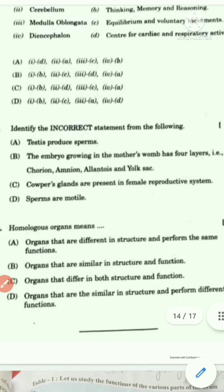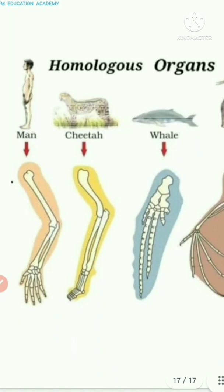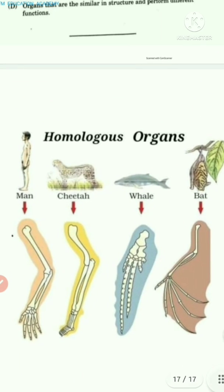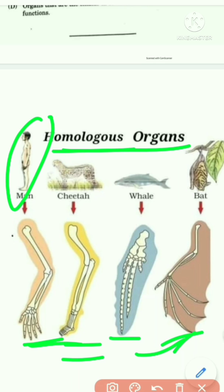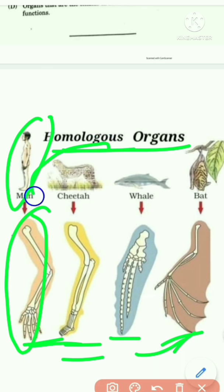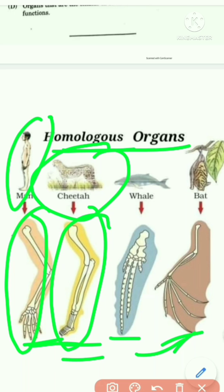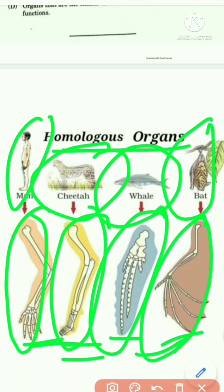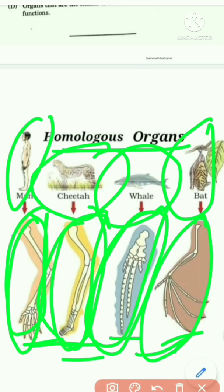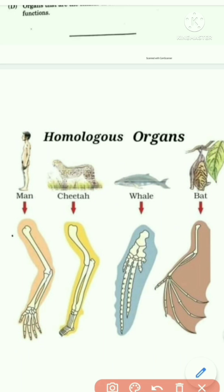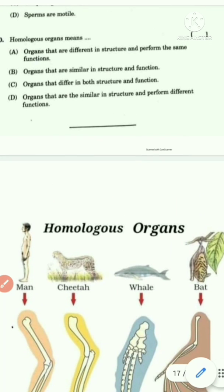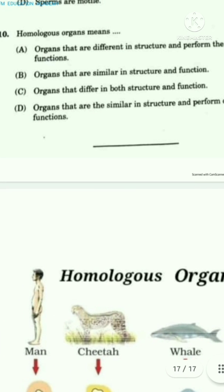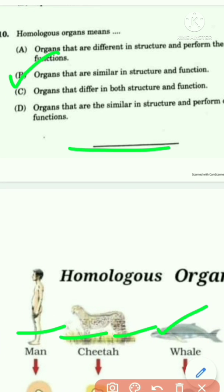The tenth question asks what homologous organs means. From the picture in the heredity and evolution chapter, all limbs shown are similar in structure but perform different functions. For example, a human uses forelimbs for eating, drinking, and writing; a cheetah uses them to run; a whale to swim; and a bat to fly. So homologous organs are organs similar in structure but different in function — Option B.